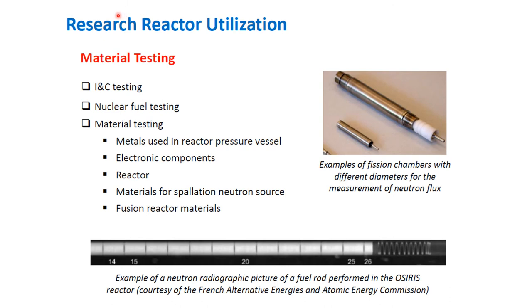One of the major applications of research reactors — whether low, medium, or high power — is the ability to perform testing and calibration experiments. This can be applied to various types of instrumentation, as well as to materials intended for use in nuclear fuels or reactor structural components. Specific aspects include IC testing, nuclear fuel testing, and material testing.